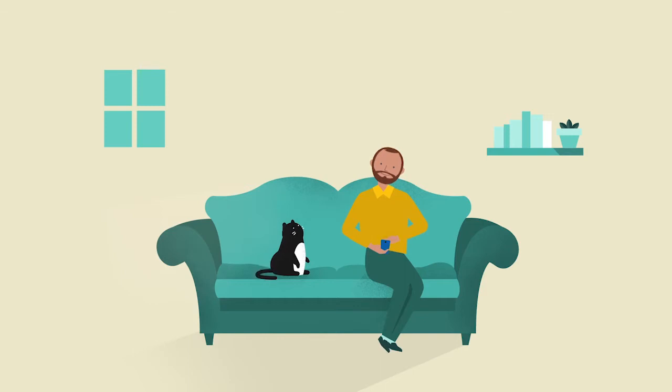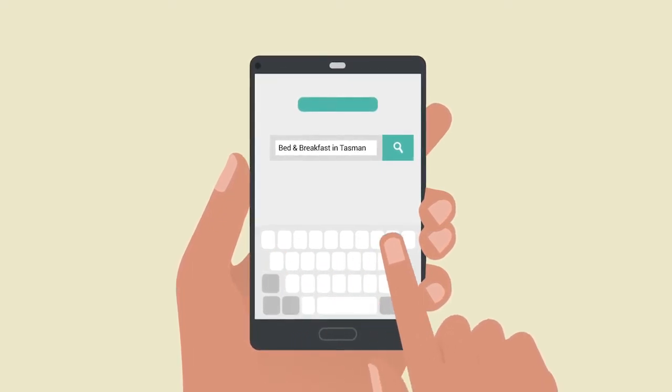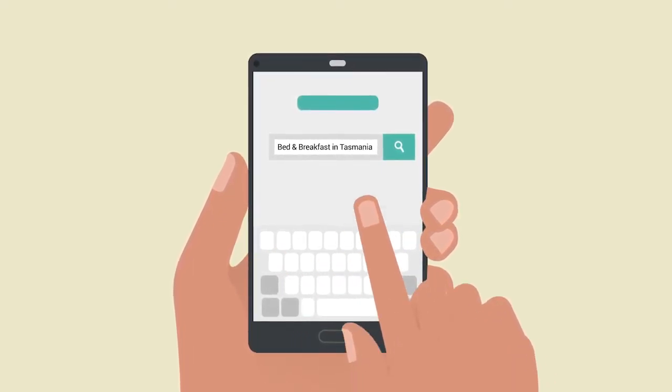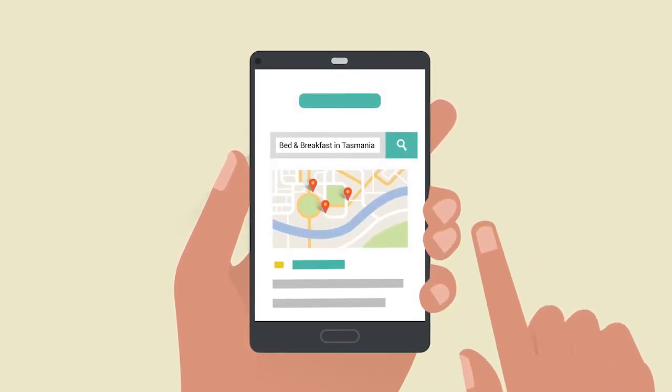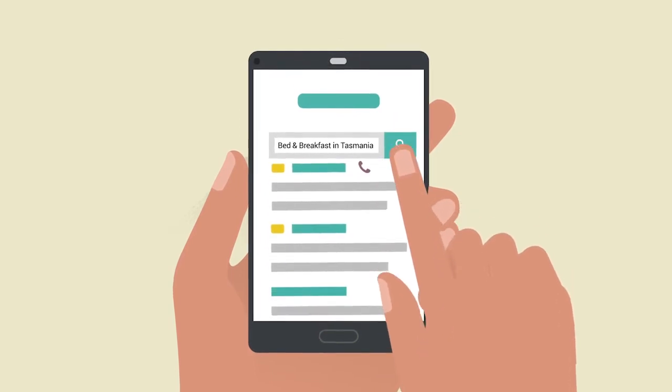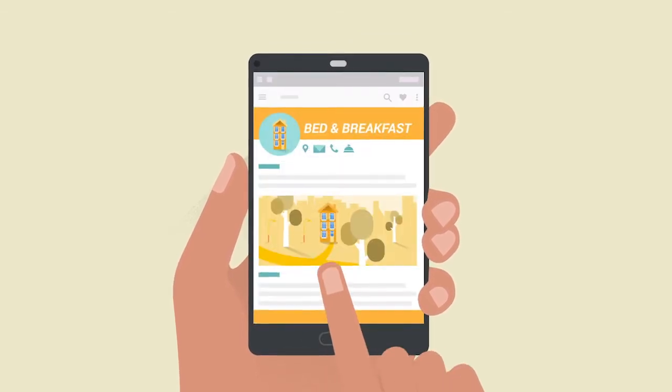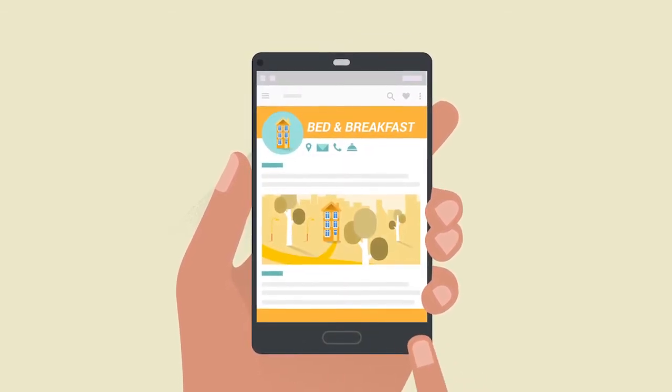Let's play out an example of a journey a customer goes through before they make a reservation. If you are looking for a bed and breakfast in say Tasmania for a trip you'll be making there three months from now, the first thing you might do is go online and search for a term like bed and breakfast in Tasmania. After you search, you end up on a search results page, and from there you might spend some time clicking around on some B&B websites that interest you.